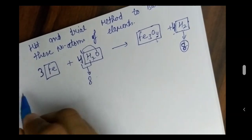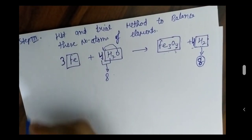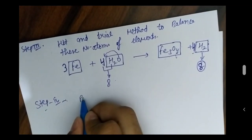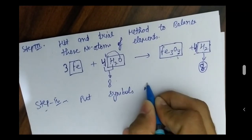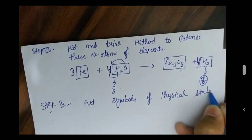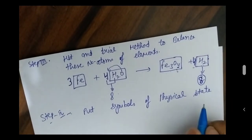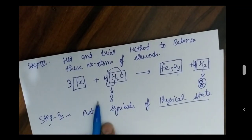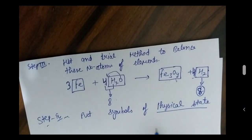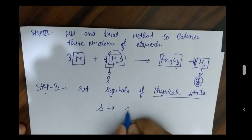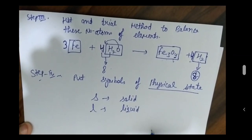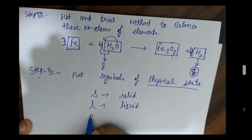Now we have to put the symbols of physical state in the chemical equation. Physical states indicate whether elements or compounds are solid, liquid, or gas. We put S for solid and L for liquid.